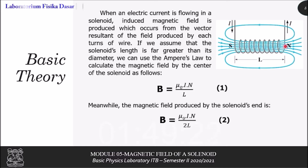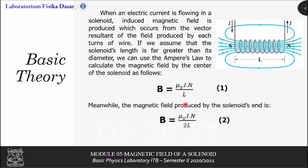In this experiment, we assume that the diameter of the solenoid is far less than the length of the solenoid. In this case, we can use Ampere's law to approximate and calculate the magnetic field at the center of the solenoid, as given in the first equation: B equals mu0 times I times n over L, in which B is the magnetic field magnitude, mu0 is the vacuum permeability, I is the current given to the solenoid, n is the number of turns, and L is the length of the solenoid. If you want to count the magnetic field produced by the solenoid's end, it has only a difference of a factor of half, as seen in the second equation.